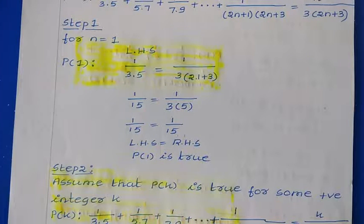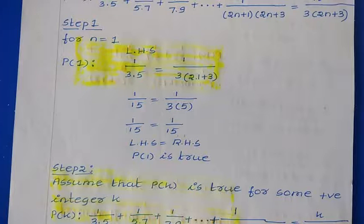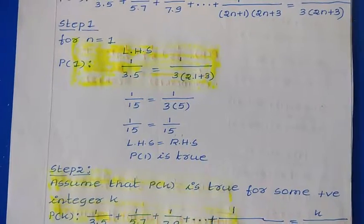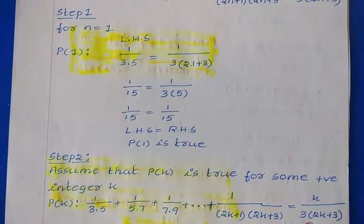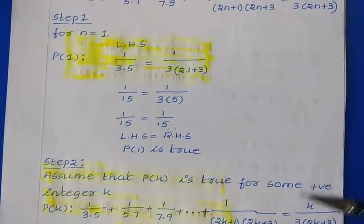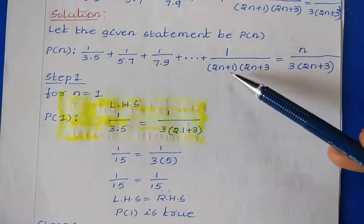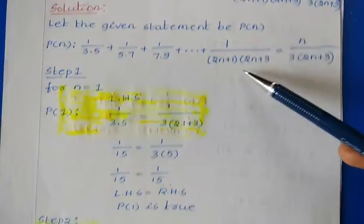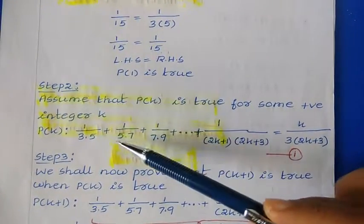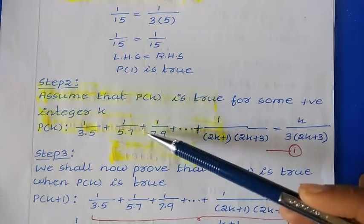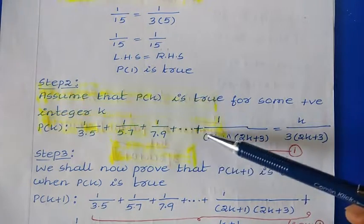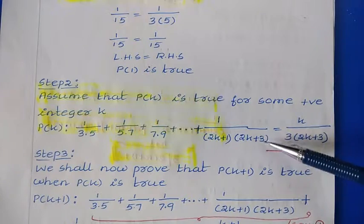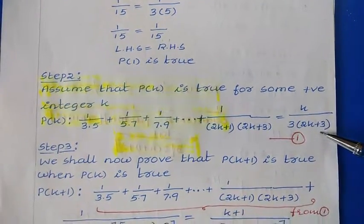The second step is making the assumption. We take some positive integer k and assume that P(k) is true for that integer. P(k): 1/(3×5) + 1/(5×7) + 1/(7×9) + ... + 1/((2k+1)(2k+3)) = k/(3(2k+3)). Let this be statement 1.